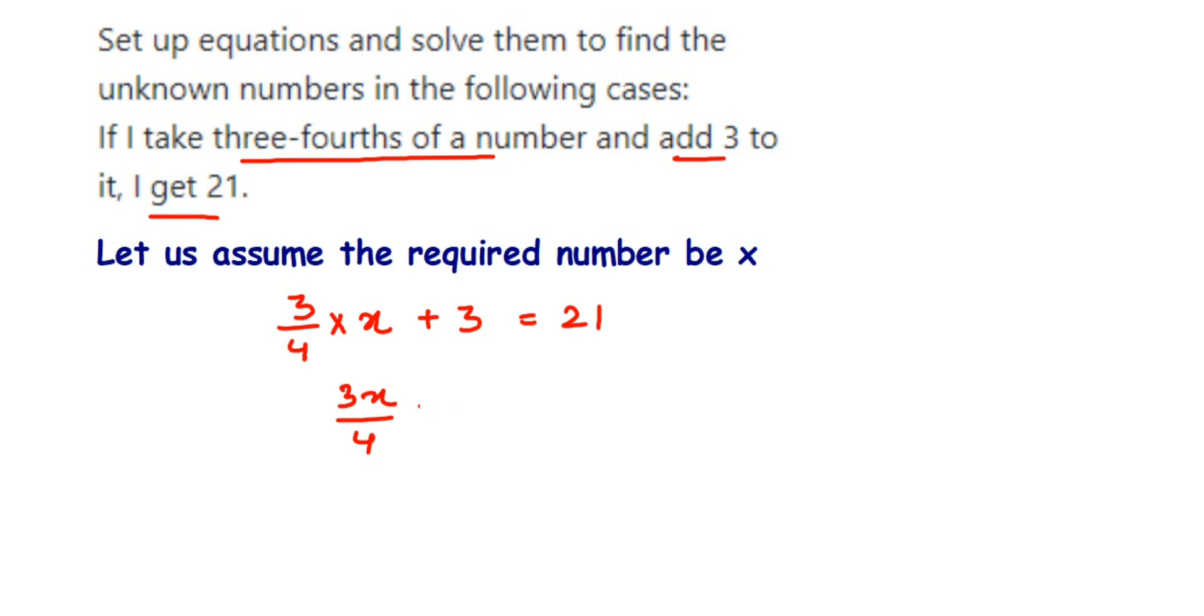3 is like addition, right? When transposed it comes in subtraction, the sign will become opposite, it will become minus. So this will be equal to 21 minus 3. So when you subtract, it will get the answer 18. So 3x upon 4 is equal to 18.